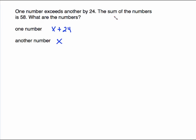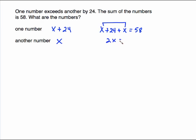Then we look at the next sentence which tells us the sum of the numbers is 58. All we have to do is add these up, because that's what sum means. So x plus x plus 24 equals 58 — a very simple equation to solve. Combine like terms: x plus x is 2x. Subtract 24 from both sides gives me 34. Divide by 2 and x is 17.